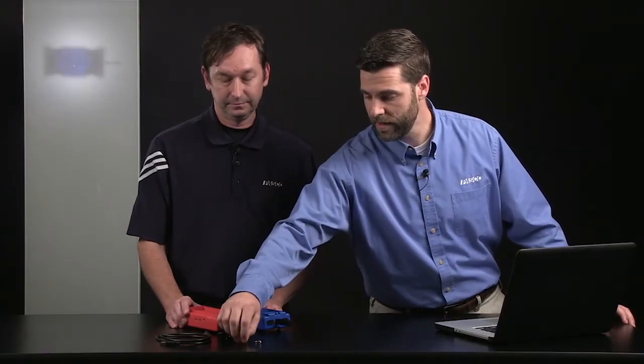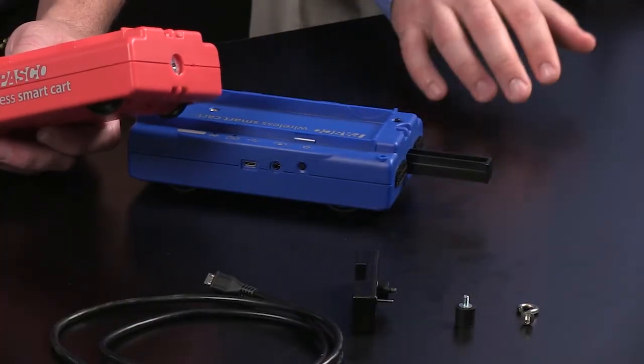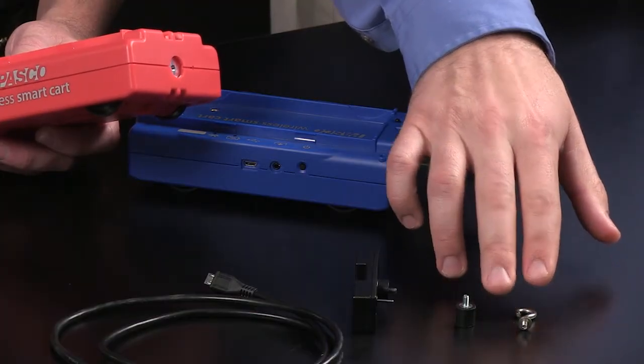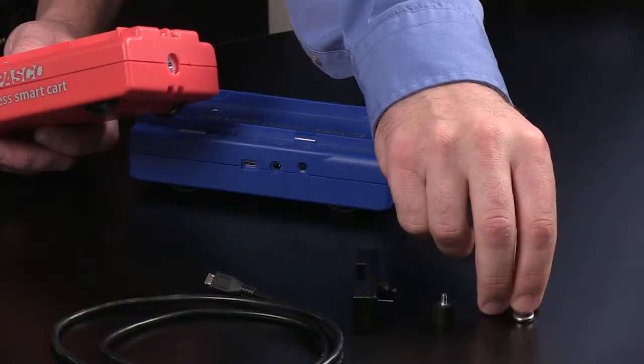In addition to that, we've got three accessories that we can mount to the force sensor that's on our wireless smart cart. Two of these here, you'll see they look familiar. They are the same accessories that come with the Pasco force sensors currently. One is a rubber bumper and the other is a metal hook. And like I said, all of them can mount to the front of the cart just like it mounts to the front of our force sensors.